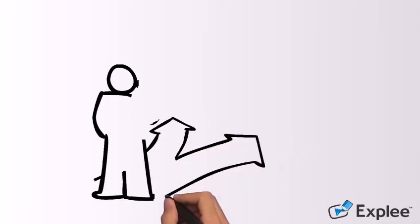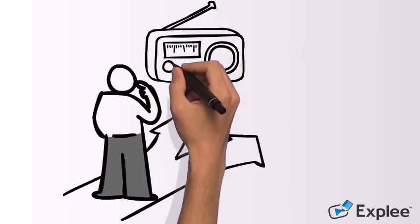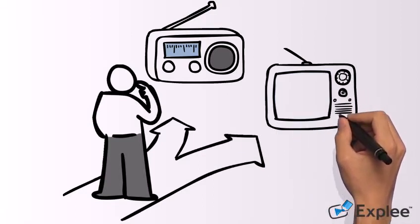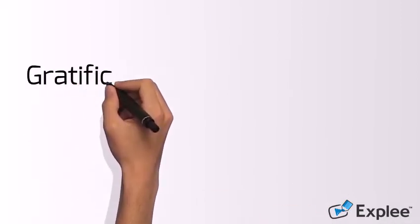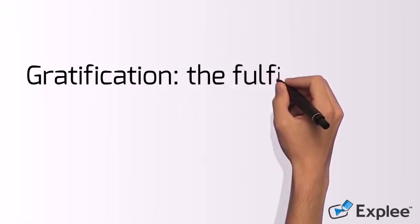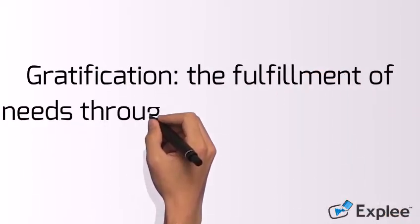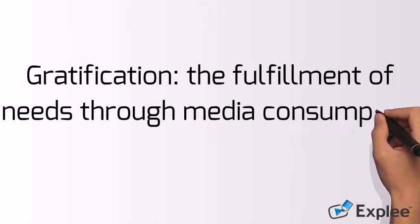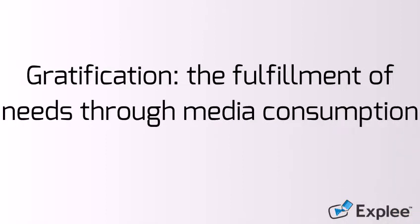Uses and gratifications theory is focused on active choices made by the audience and seeks to understand how and why these choices are made. In the context of this theory, gratification is the fulfillment of a social or psychological need through the interaction with media. Identifying and understanding these needs is a key area of uses and gratifications theory.